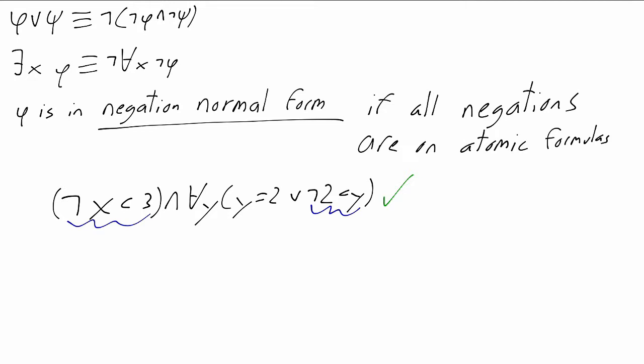There are two negations in this formula. One is at the negation of x is less than 3, and one is at the negation of 2 is less than y. Those are both negations of atomic formulas.